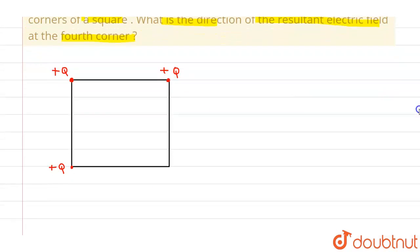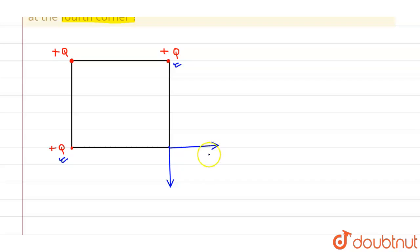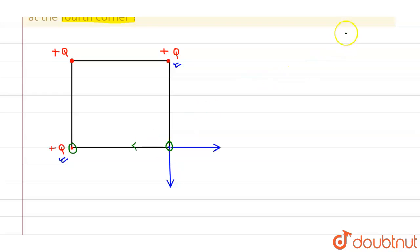We have to find out the direction of resultant electric field at the fourth corner where no charge is placed. Because of this positive charge, the electric field is in this particular direction. Similarly, because of this particular charge the electric field will be in this direction, because the electric field always acts in the direction of the line joining the source and the field point. If the charge is negative, the direction will be toward it; if positive, the field points away.